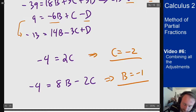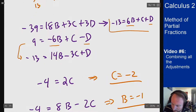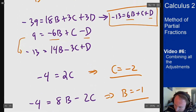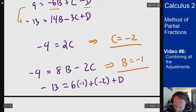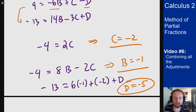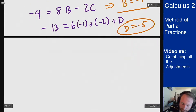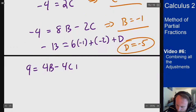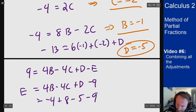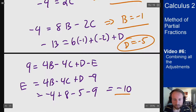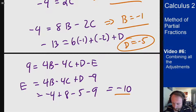With C = −2, adding two further equations gives −4 = 8B − 2C = 8B + 4, so B = −1. Working back up: using −13 = 6B + C + D = −6 − 2 + D gives D = −5. Going back to an earlier equation to find E: 9 = 4B − 4C + D − 9·(something), giving E values, completing the partial fraction decomposition.